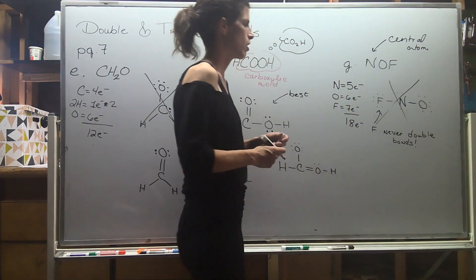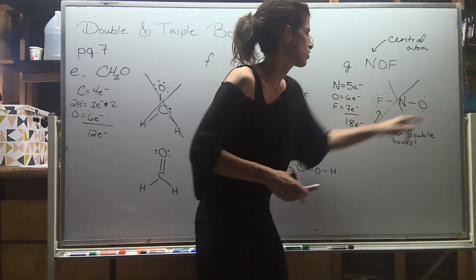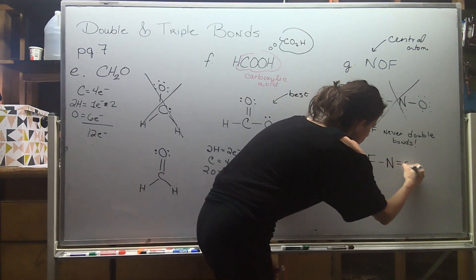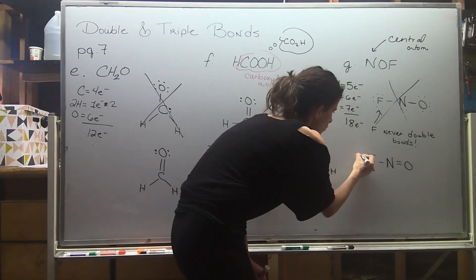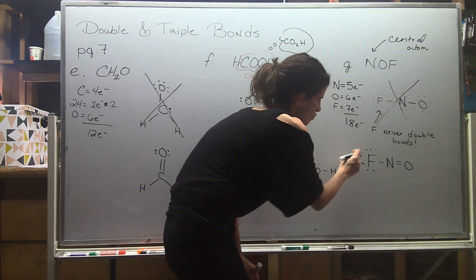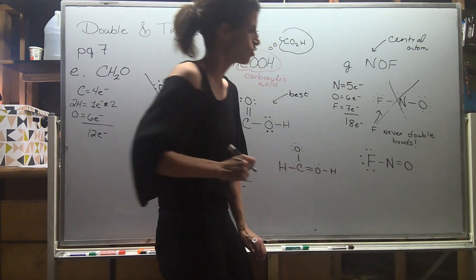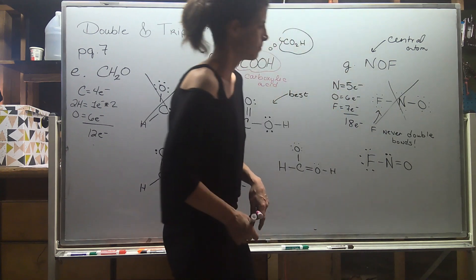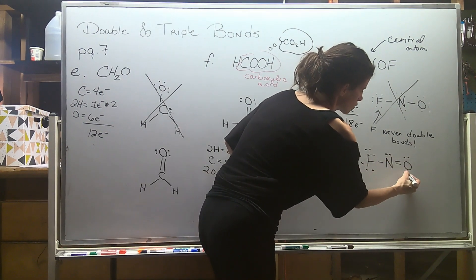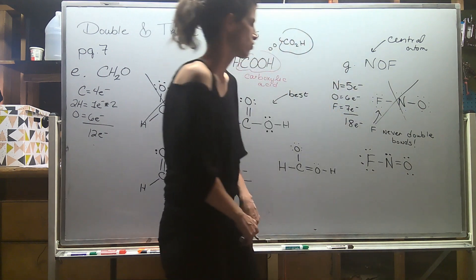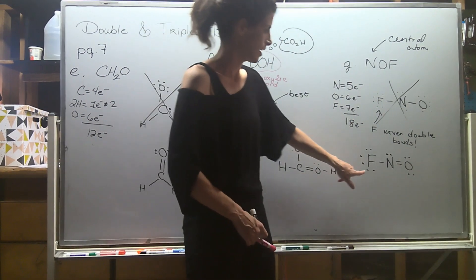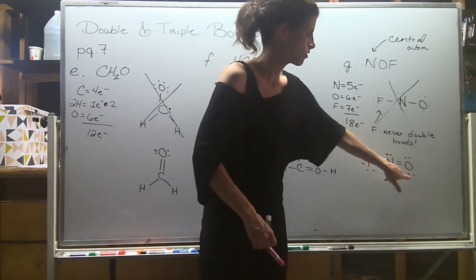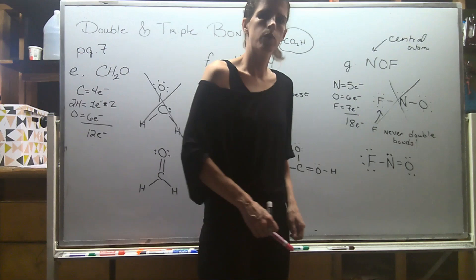So the double bond goes between nitrogen and oxygen. Completing the octets: six more electrons on fluorine gives it two, four, six, eight. Nitrogen has two, four, six, so it needs one lone pair on top to reach eight. Oxygen currently has four, so I'll put four more electrons around it. Checking: two, four, six, eight, ten, twelve, fourteen, sixteen, eighteen. We used exactly 18 — the structure is correct.